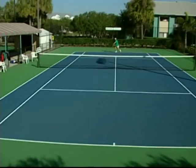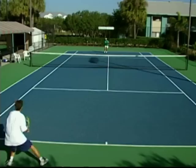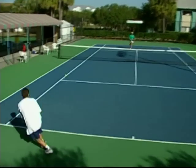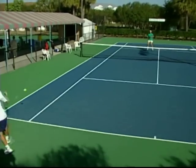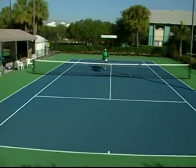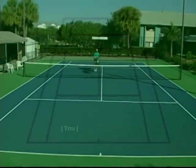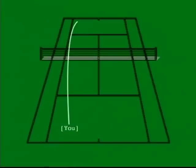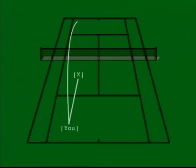The shot direction on the approach shot that works best for your court position is down the line. Hitting down the line provides you with the shortest distance to travel to get into position at the net.